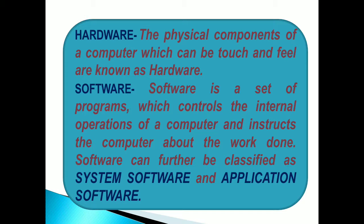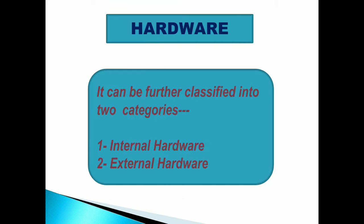Software instructs the computer about the work to be done. Software can be classified into two main parts: first is System Software and the other one is Application Software. Hardware also can be classified into two categories: Internal Hardware and External Hardware.